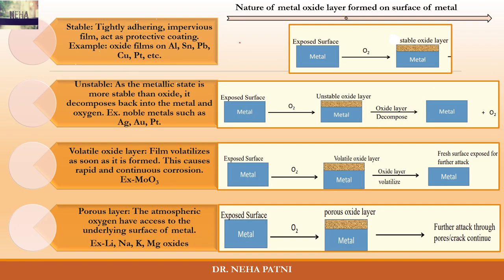The nature of the oxide layer can be of four types. First: the metal's exposed surface reacts with oxygen and forms a stable oxide layer. If the layer is stable, it will not allow outward diffusion of metal ions or inward diffusion of oxide ions, so no further metal oxide forms. These are tightly adhering films that act as a protective coating. Examples include aluminum, tin, lead, and copper.